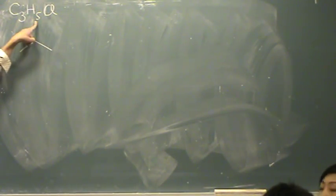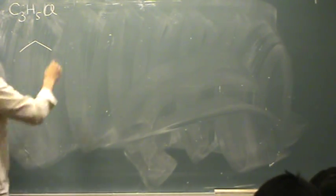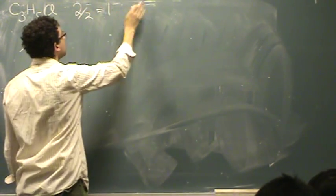Oh, first let's find the degrees of unsaturation so I know what I'm up against. Well, we can count a halogen as a hydrogen. So it's like C3H6. How many hydrogens am I missing? Two. Two divided by two, that's one degree of unsaturation.